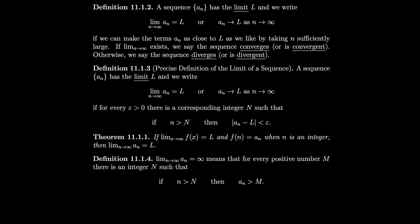The precise definition: the sequence has limit L if for every ε > 0 there is a corresponding integer N such that if n > N then |an − L| < ε. What we're saying is that if the limit exists, you can go above some certain index N and make your sequence arbitrarily close to the limit.